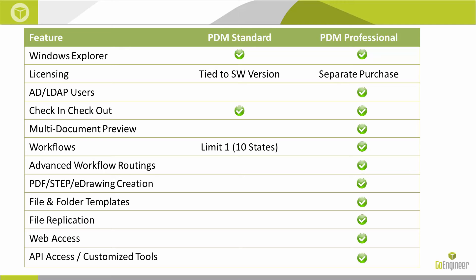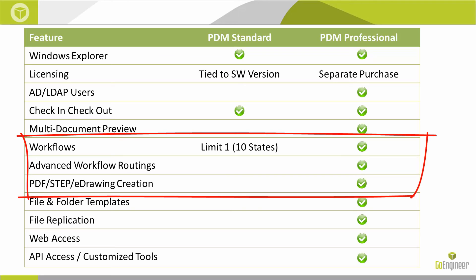While you can check in or check out any file type in either system, PDM Standard only supports built-in preview of SOLIDWORKS files through eDrawings. PDM Professional supports preview of Office files, PDFs, images, 2D AutoCAD files, and many more common file types. In workflows, PDM Standard only permits one workflow limited to a maximum of 10 states, meaning all documents in the vault must follow the same process, with no means for supporting a parallel review or approval process.